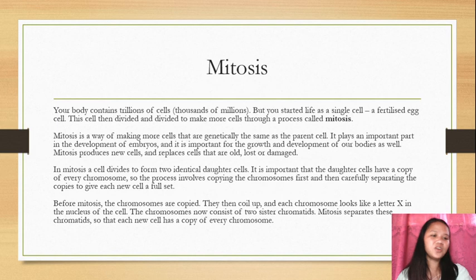Mitosis: Your body contains trillions of cells but you started life as a single cell, a fertilized egg cell. This cell then divided and divided to make more cells through a process called mitosis. Mitosis is a way of making more cells that are genetically the same as the parent cell. It plays an important part in the development of embryos and is important for the growth and development of our bodies as well. Mitosis produces new cells and replaces cells that are old, lost or damaged.